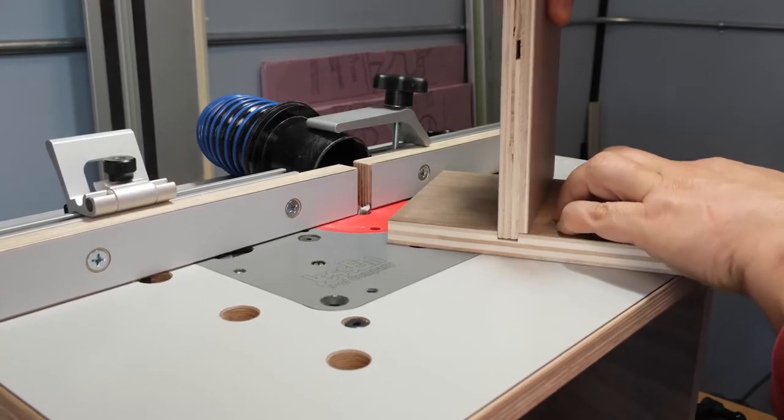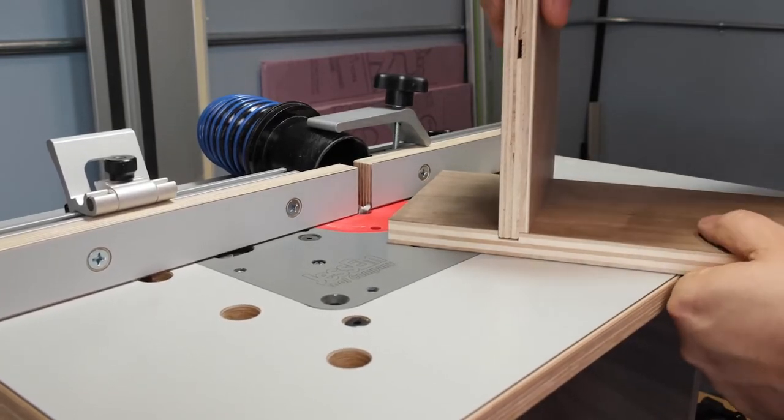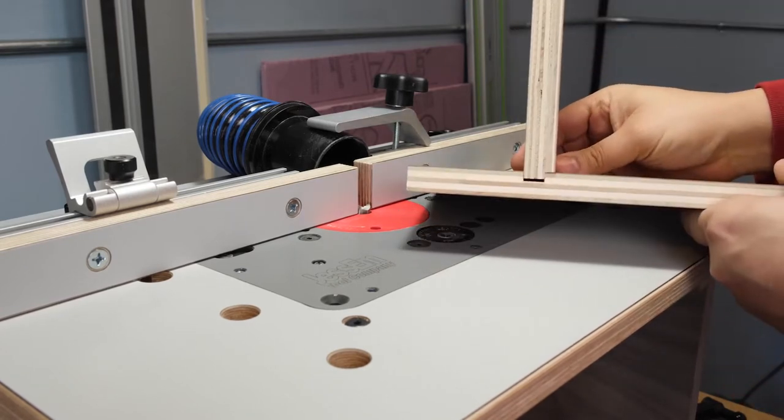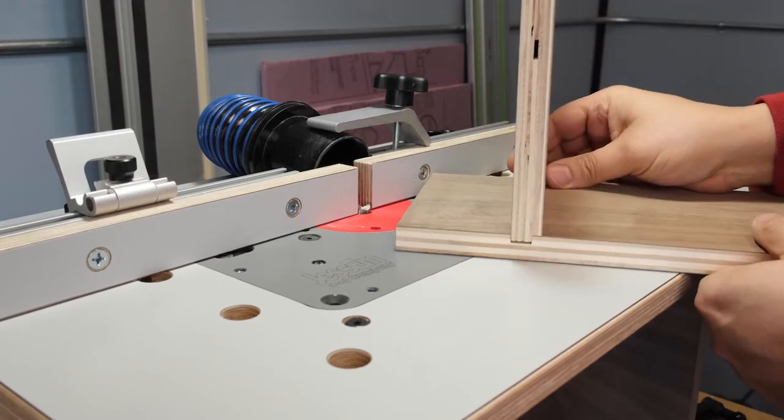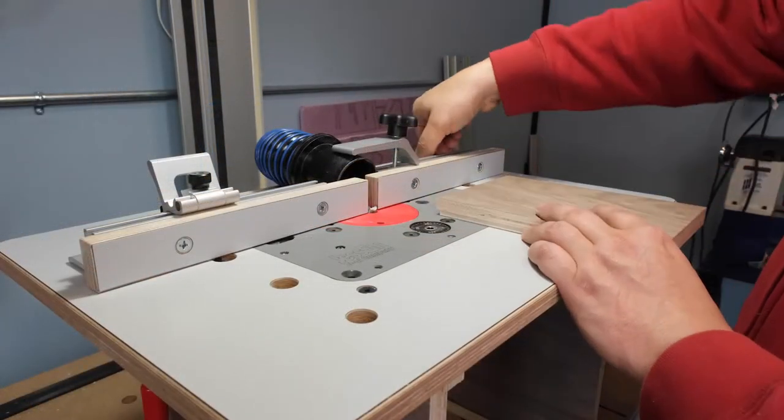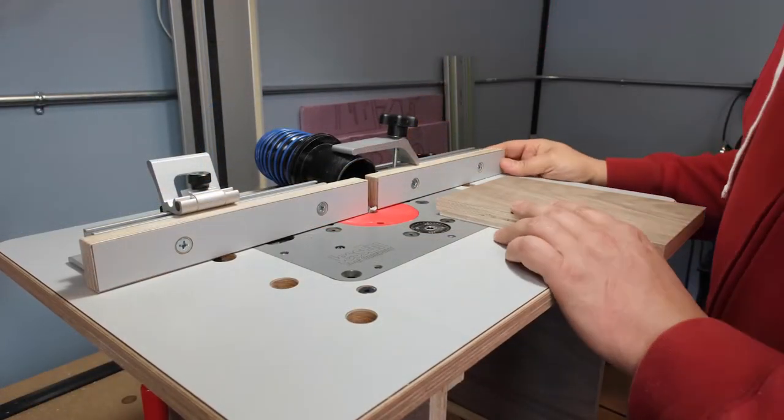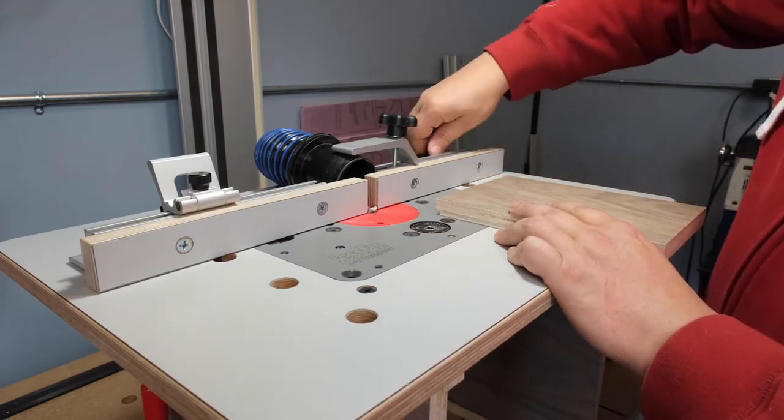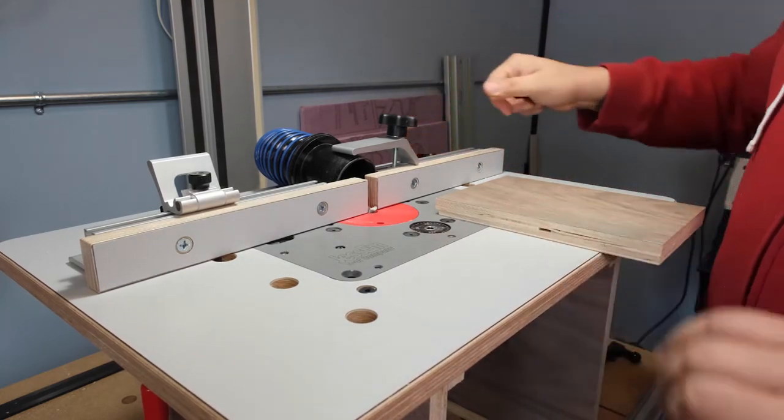A good fit is when it only takes moderate hand pressure to fit the tongue into the dado. Now we can move on to the width of the tongue. Loosen one side of the fence and slide it back a couple of millimeters and pass the board through. This will increase the width of the tongue slightly.